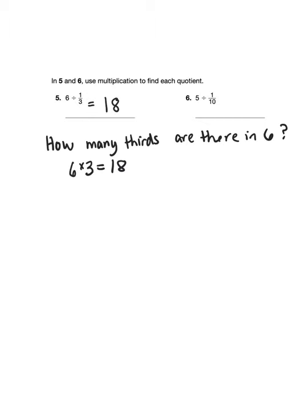Okay, for questions five and six we're going to use multiplication to find the quotient. We're going to figure out how many thirds there are in six. So if I visualize six wholes, each one divided into three equal pieces, I can do 6 times 3, and that will give me 18 thirds. So the answer to 6 divided by 1/3 is 18.